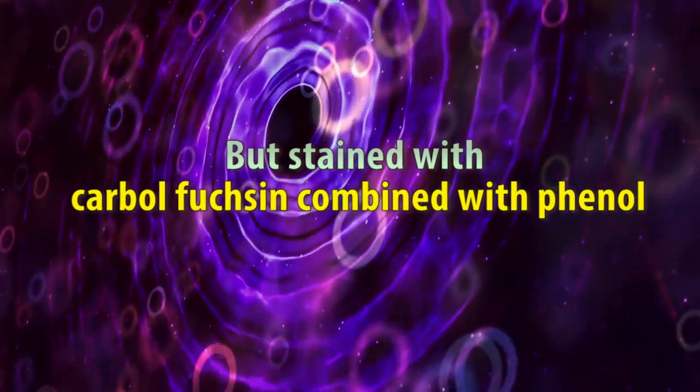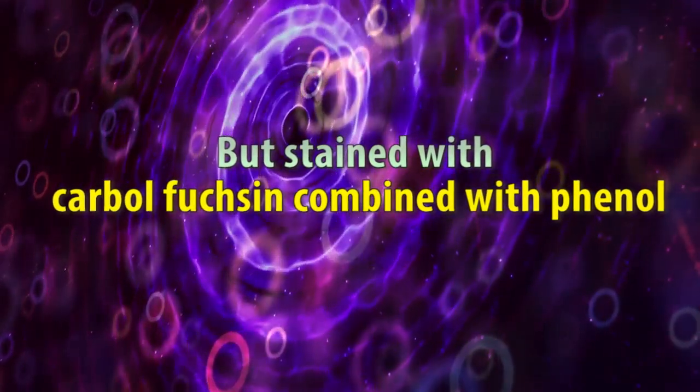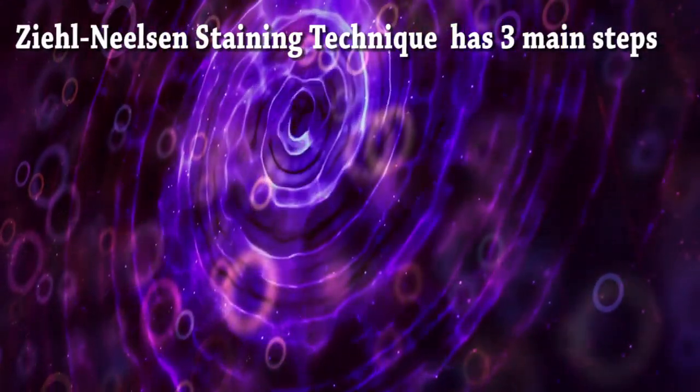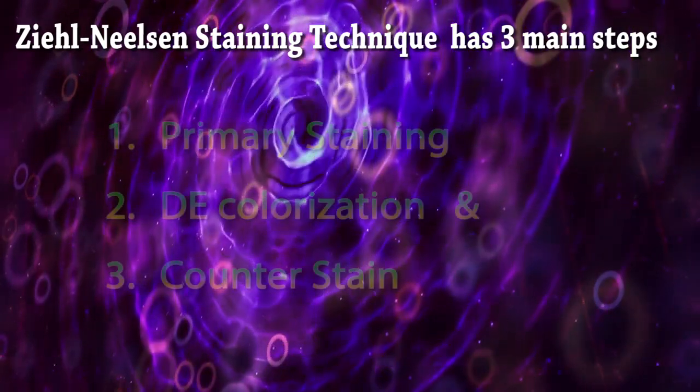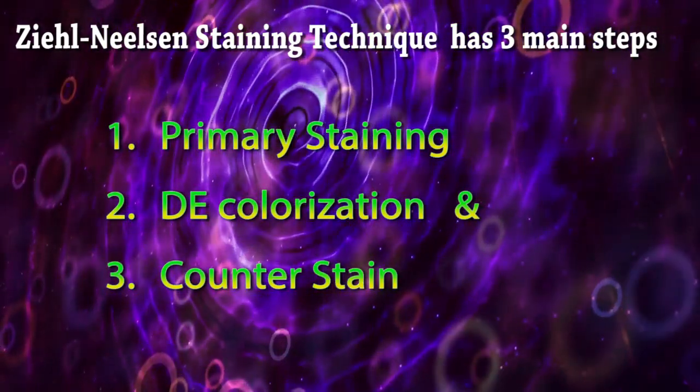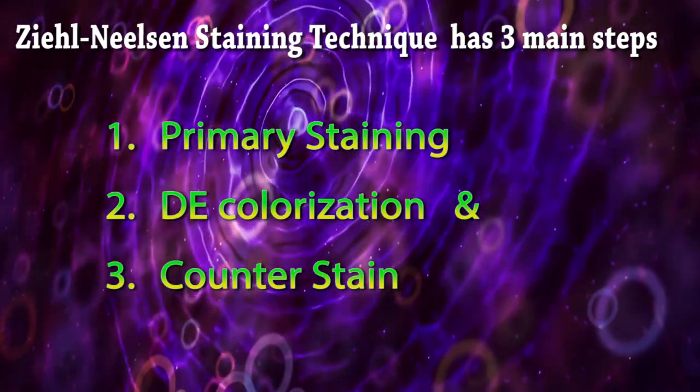But stained with carbolfuchsin combined with phenol. Zeal-Nielsen staining technique has three main steps: primary staining, decolorization, and counter stain.